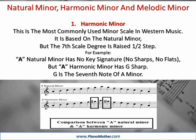The harmonic minor is based on the natural minor, but the seventh scale degree is raised a half-step. For example, A natural minor has no key signature — no sharps, no flats. But A harmonic minor has G sharp, because G is the seventh note of A minor.